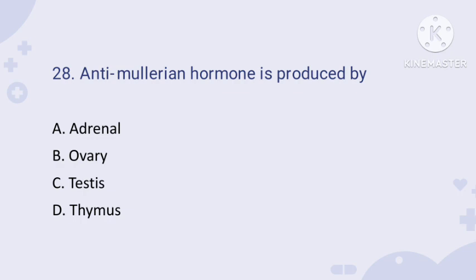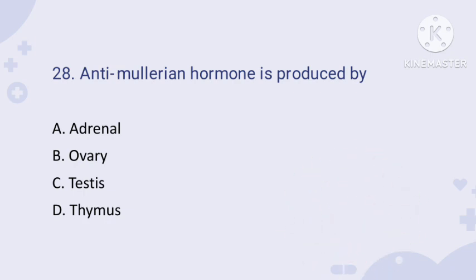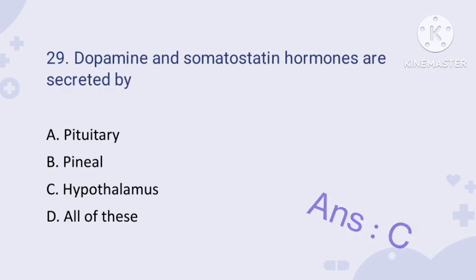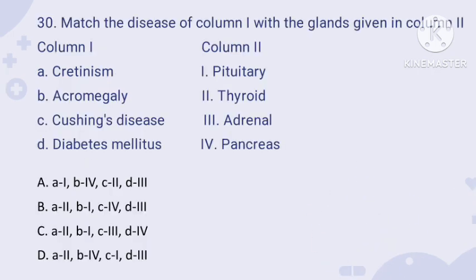Question number twenty-eight: anti-Müllerian hormone is produced by which gland? This is a very important hormone — anti-Müllerian hormone is produced by the testis. The right option is option C: testis. Question number twenty-nine: dopamine and somatostatin hormones are secreted by the hypothalamus. Therefore, the answer is C.